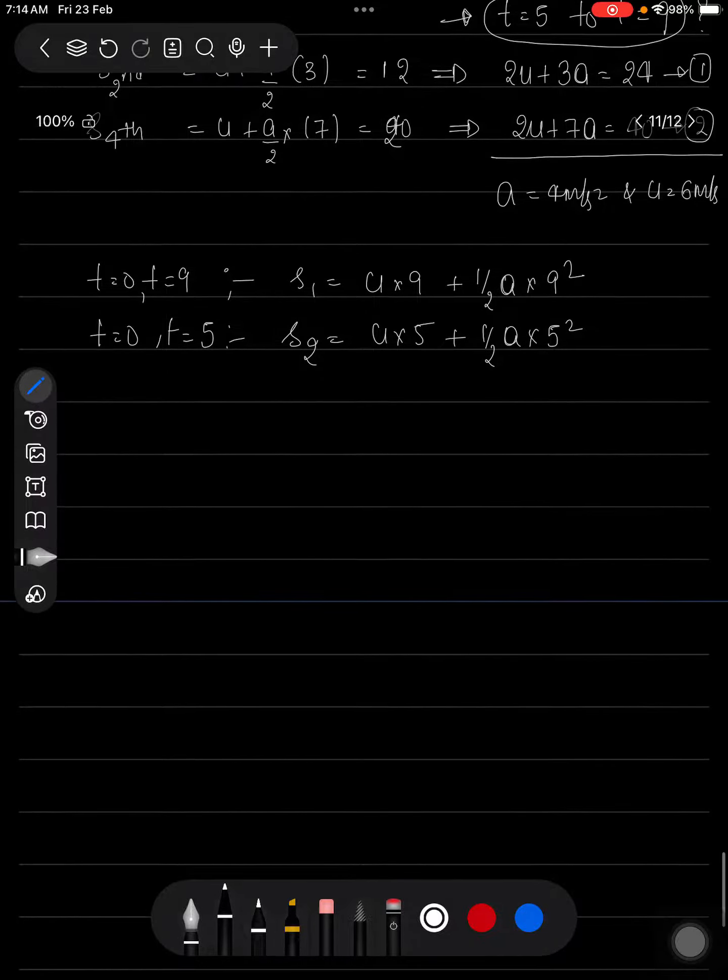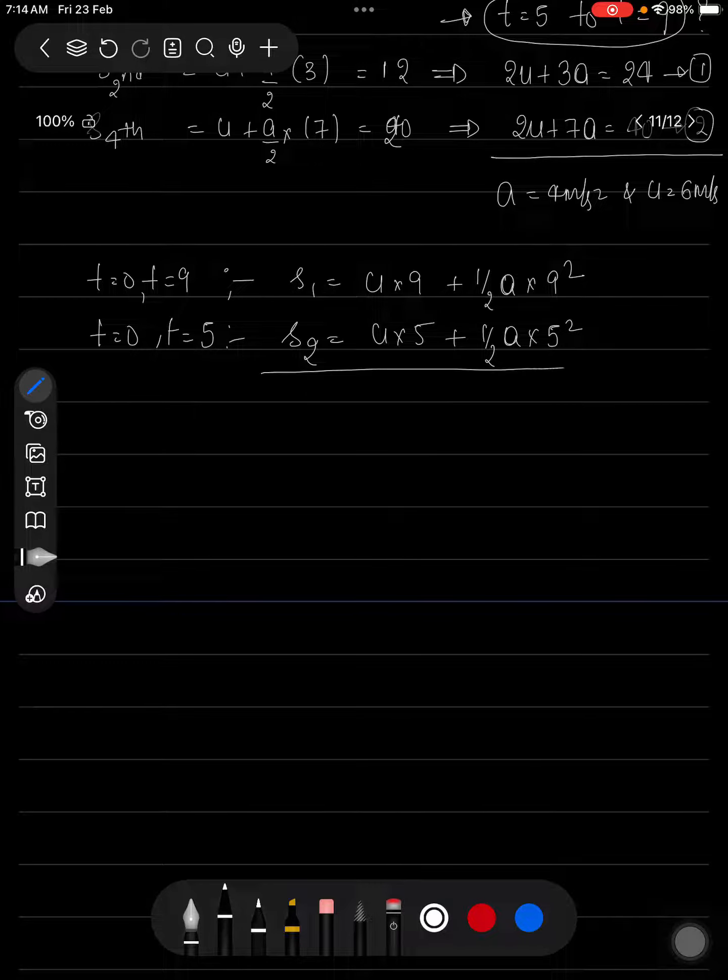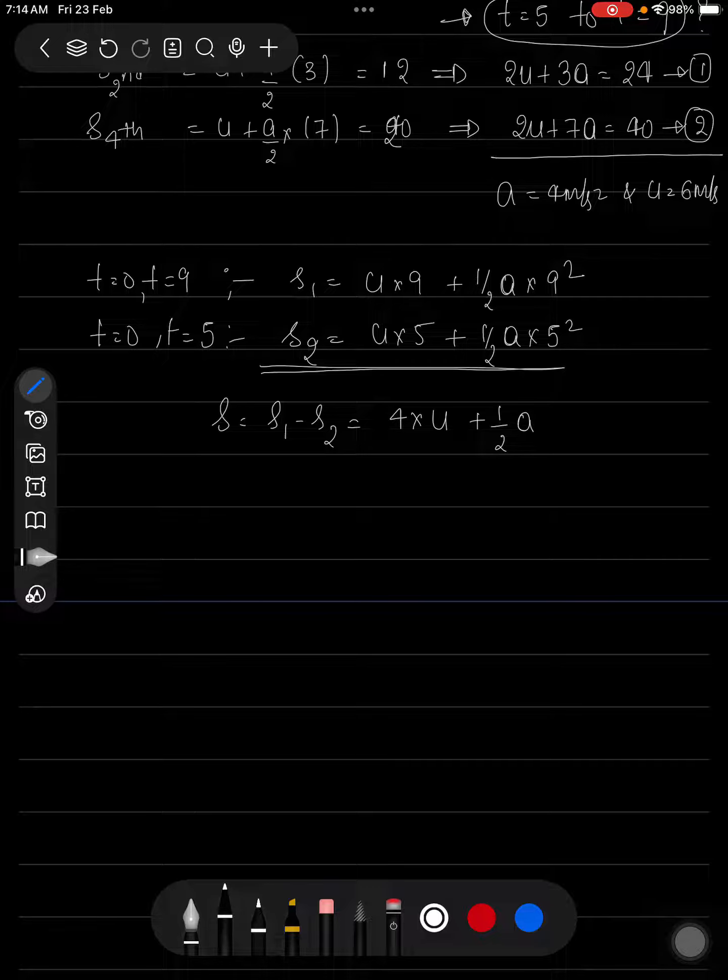So we want the difference in this distance from 5 to 9 seconds. So our required answer will be s1 minus s2 which will be 4 times of u plus half a into 81 minus 25 which will be equal to 56.